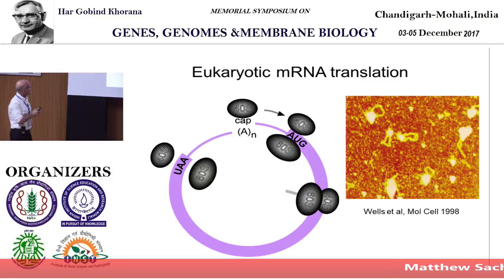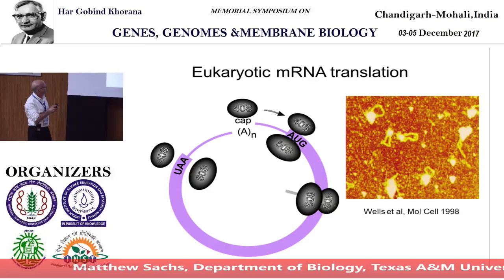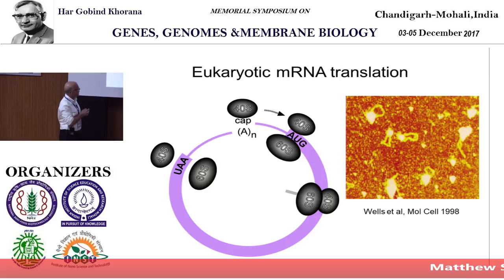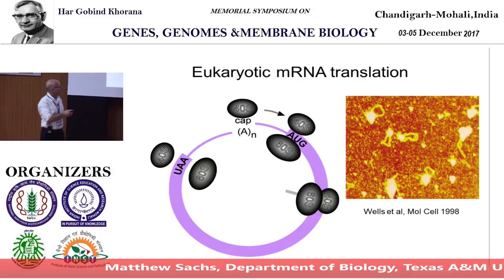Eukaryotic mRNA has a cap and a poly-A tail. Schematically, the small subunit joins at the cap and then goes and finds an initiation codon, typically an AUG, initiates when the 60S joins, and then elongates and terminates.